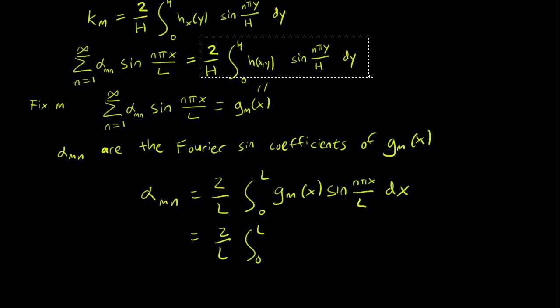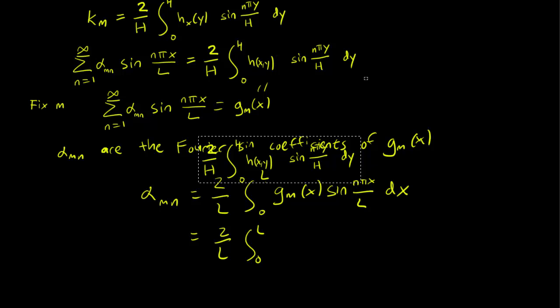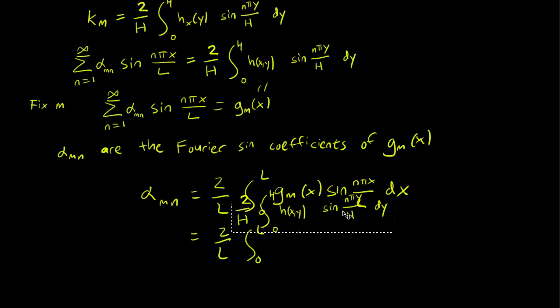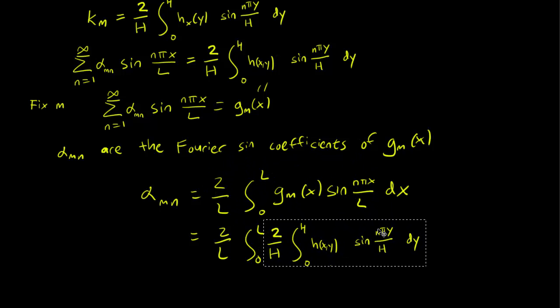So we do the substitution. Integrating the whole thing, let's bracket it to make things a bit clearer. And then we have to multiply that by sine n pi x over L dx.